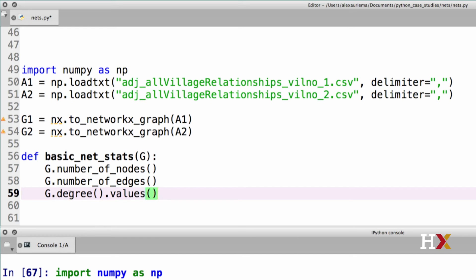So, we first extract the G.degree dictionary, we look at its values, we convert that to a list. Let's use the print function to print out the statistics to our user.